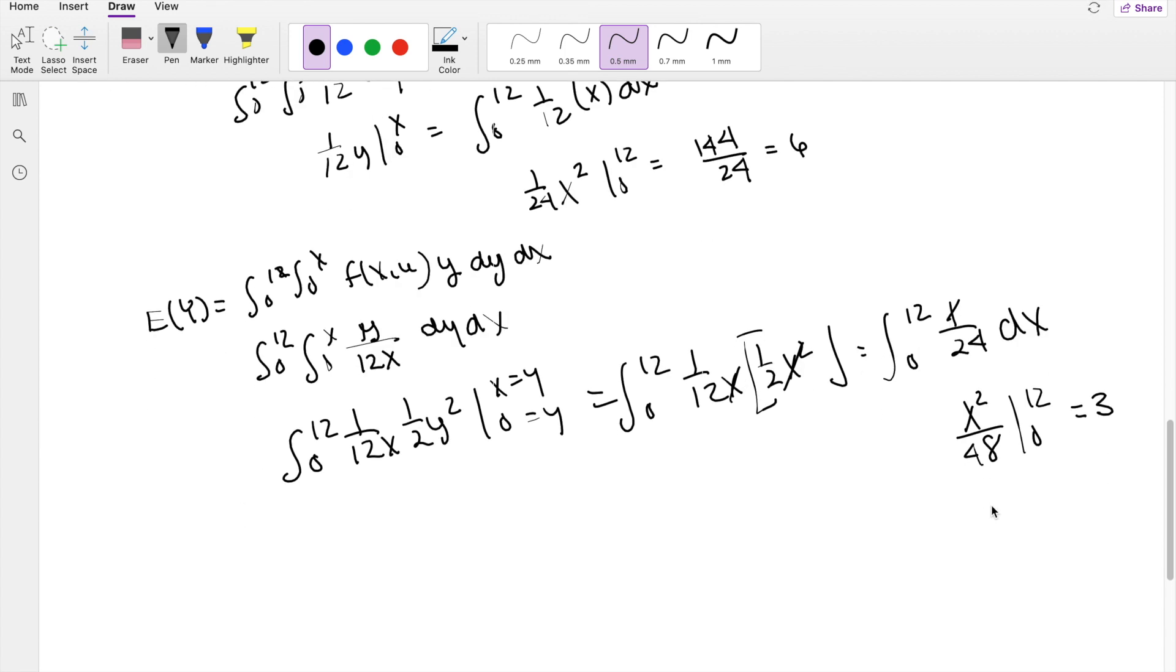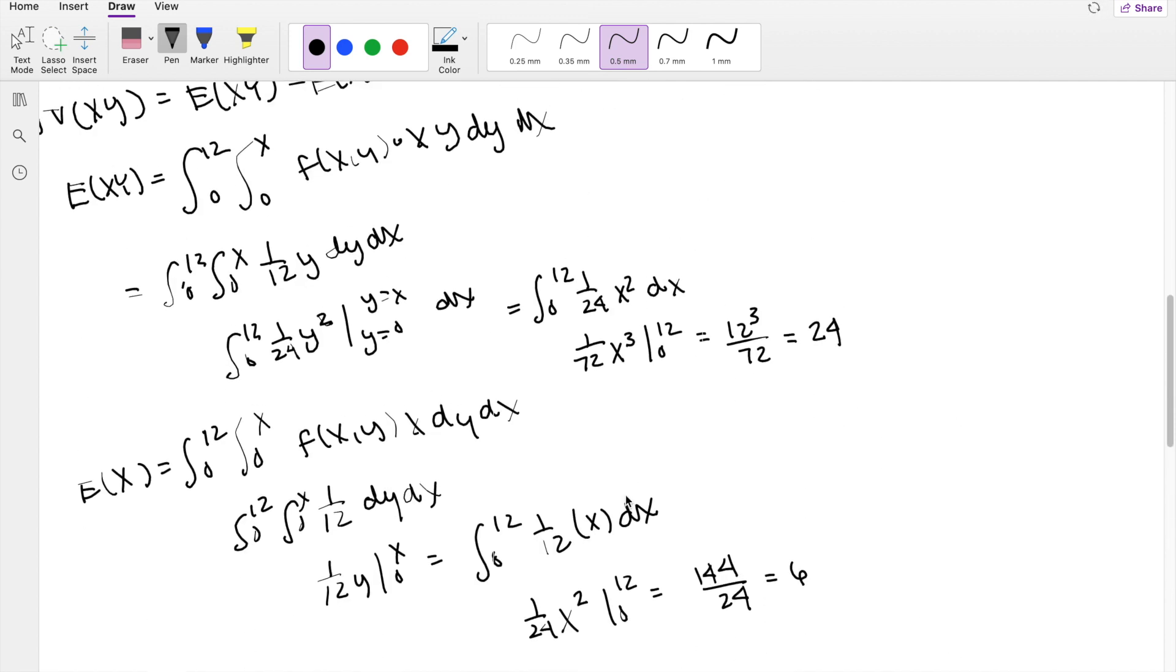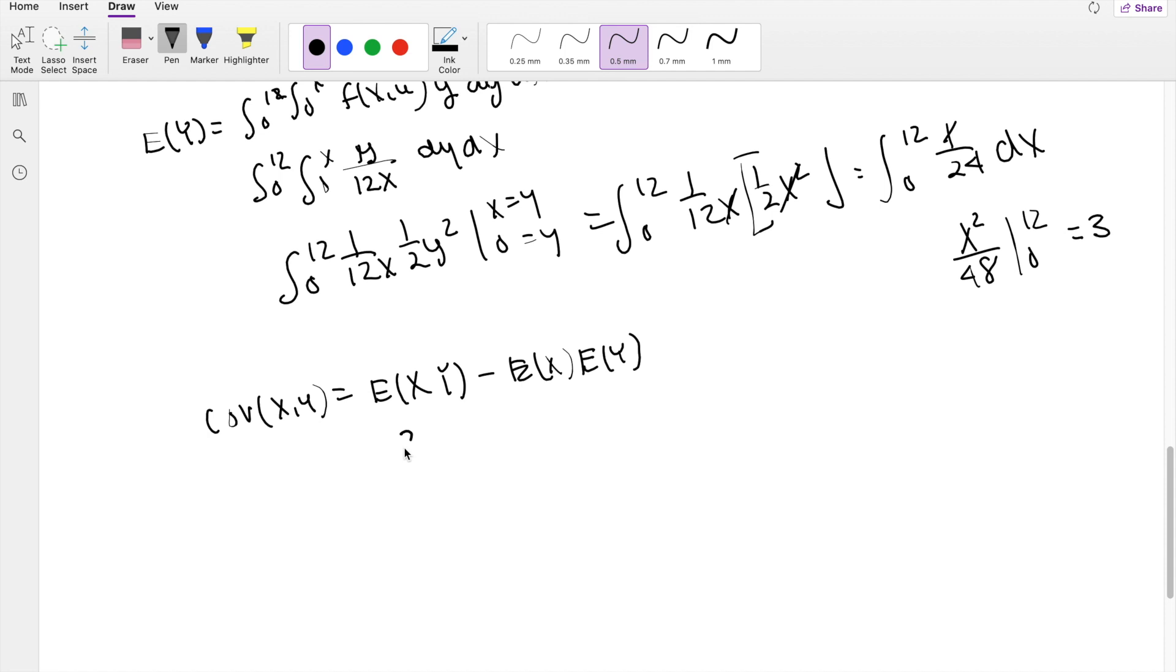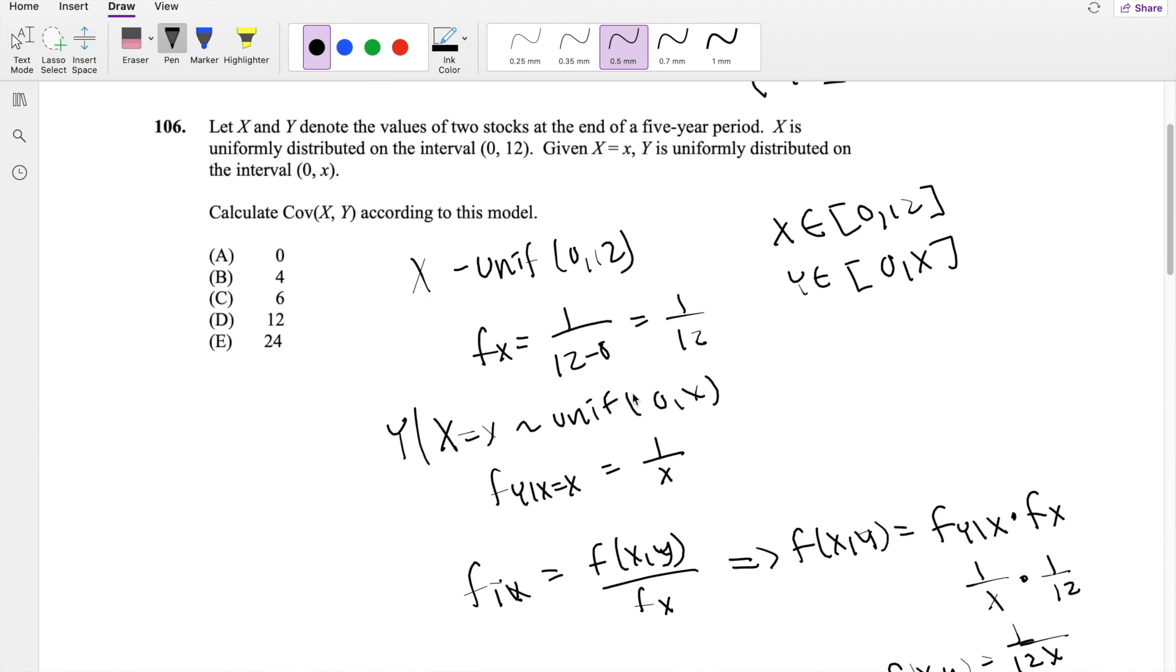So now, plugging it back into our covariance formula, this is equal to E of XY minus E of X times E of Y. E of XY is equal to 24, then this is 24 minus 6 times 3, so then this is equal to 6. Our answer is C.